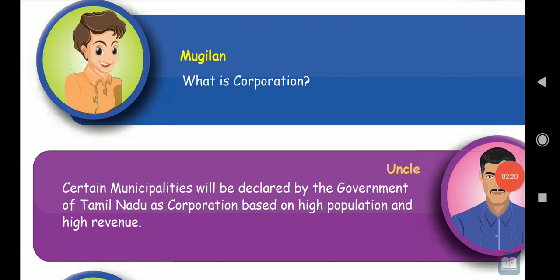Next, what is corporation? Corporation is when certain municipalities are declared by the government of Tamil Nadu as corporation. The corporations are based on high population — more than 1 lakh people live. So, 50,000 to 1 lakh is municipality area; more than 1 lakh is corporation area.